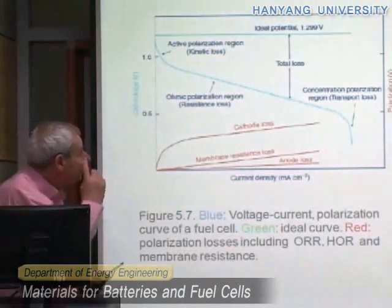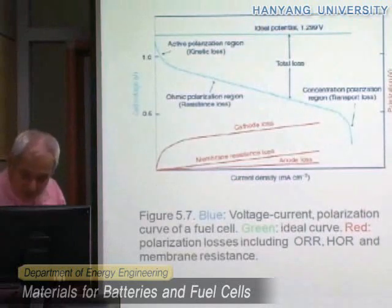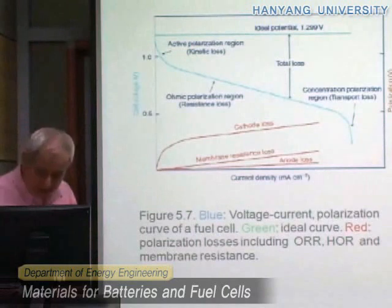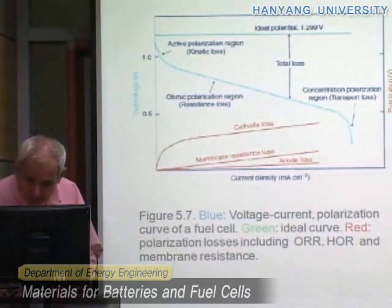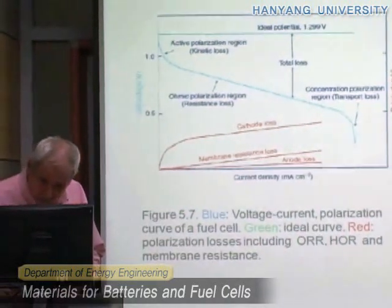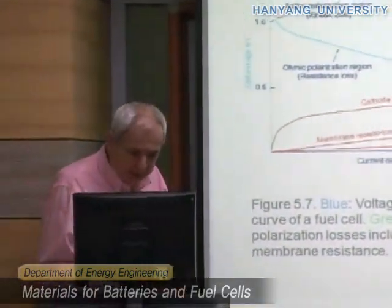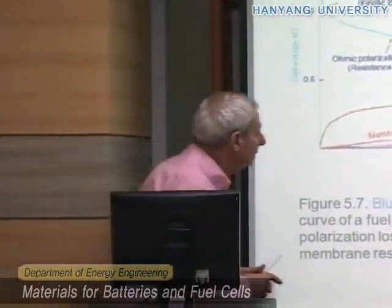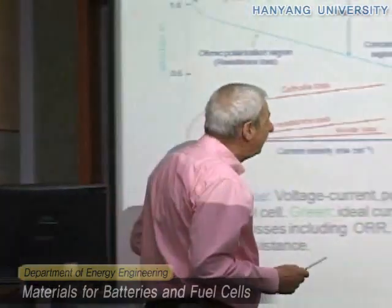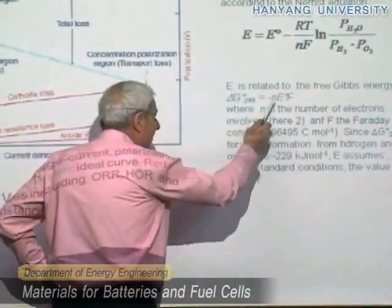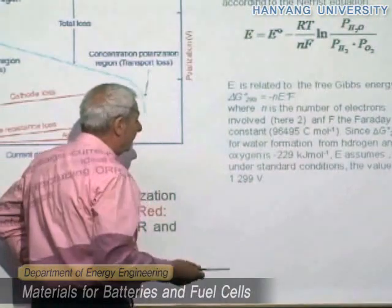Under open-circuit conditions, the cell voltage is at its maximum value. And we know that E₀ — the E — is related to the Gibbs energy by this equation, as we know very well.